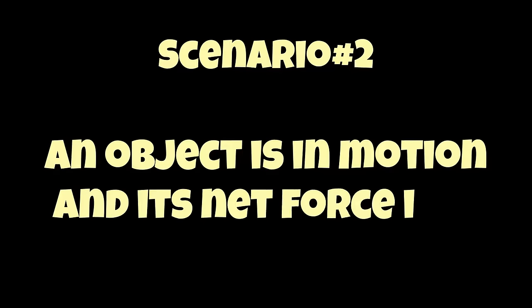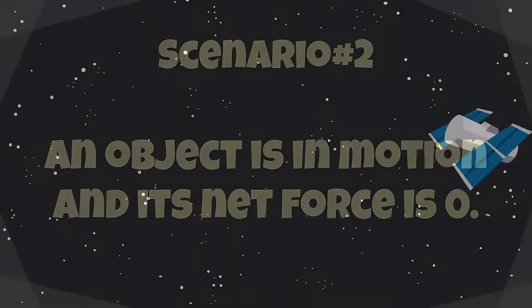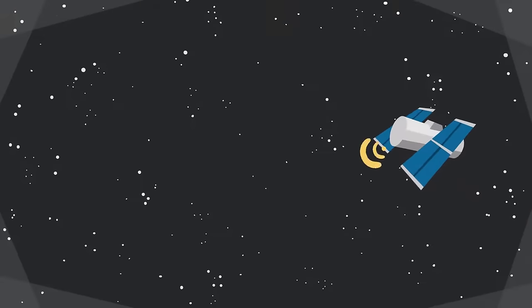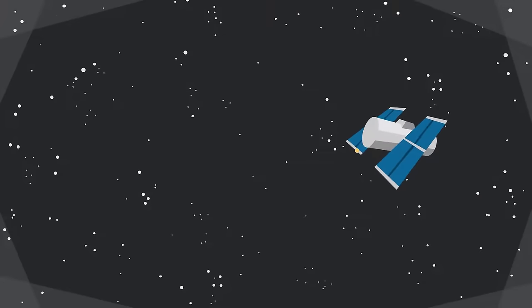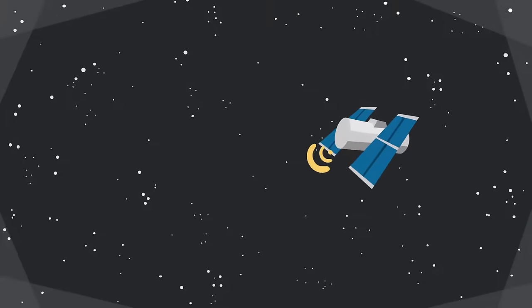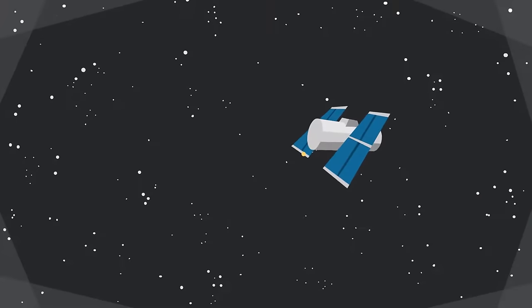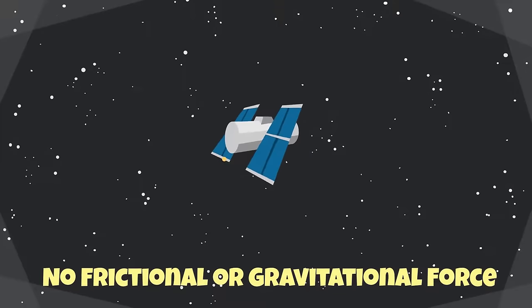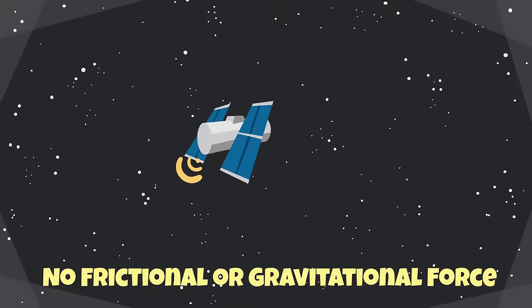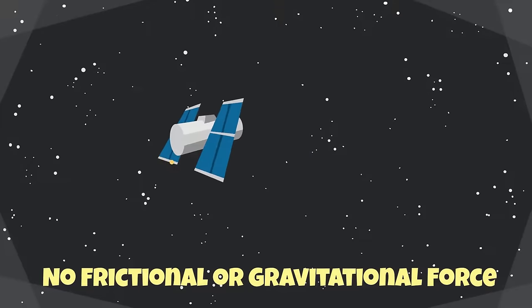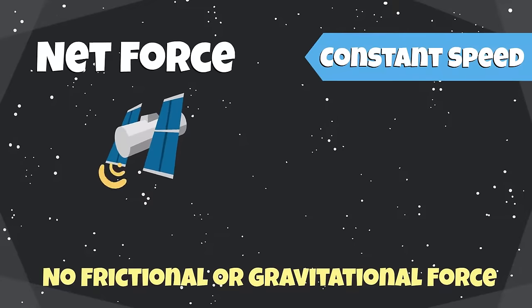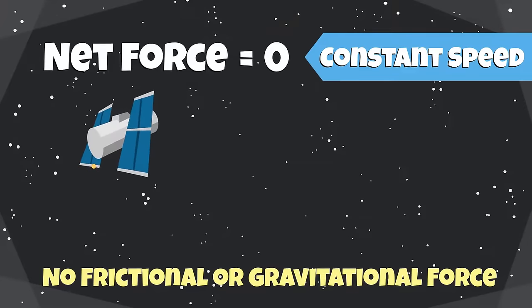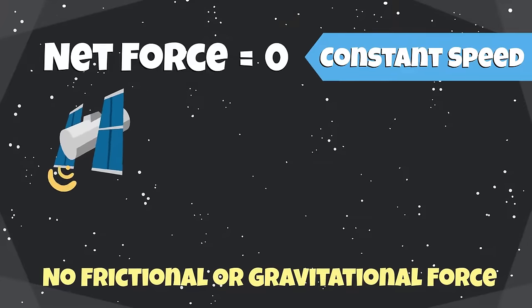An object is in motion and its net force is zero. For example, an object moving in the absence of any other forces such as friction or gravity — its inertia will keep it in motion and it will maintain a constant speed, even if the net force acting on it is zero.